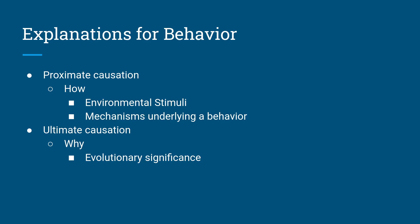There are two different main categories for explaining behavior. The first is proximate causation — basically, how does this behavior work? The other is ultimate causation — why. Proximate causation addresses how a behavior occurs or is modified, including environmental stimulus and the mechanisms behind the behavior. Ultimate causation looks more at the evolutionary significance of the behavior. Studies on proximate causation were started by Tim Bergen, and it earned him a share of the Nobel Prize. Most of the topics we discuss here are based on his work.